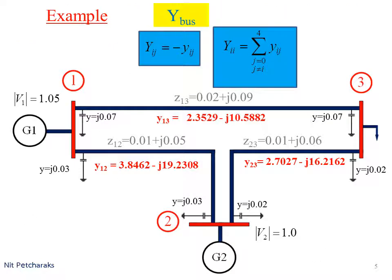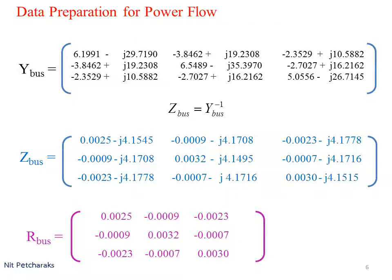Next, prepare data for power flow. Change line impedance to line admittance, which is the reciprocal of line impedance. Create Y bus, C bus, and R bus.